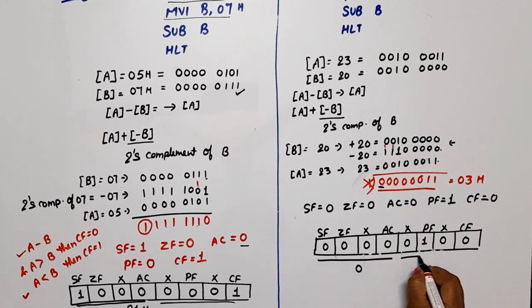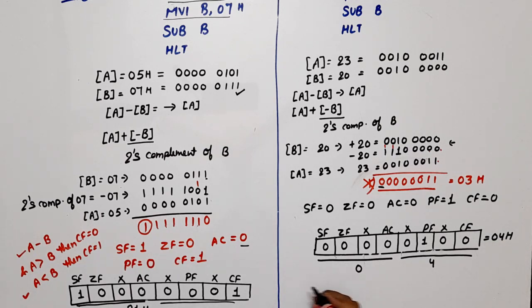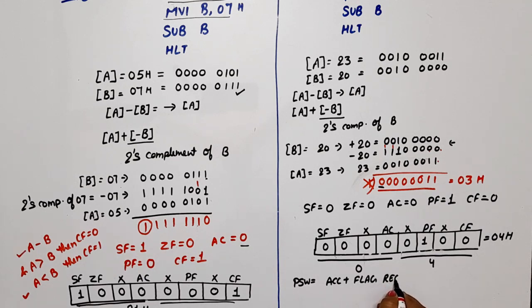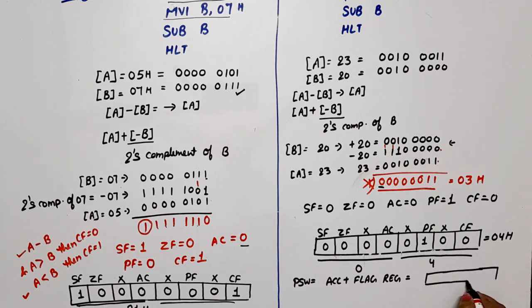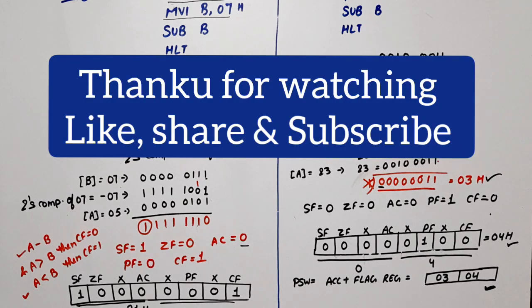The content of the flag register: SF=0, ZF=0, don't care=0, AC=0, don't care=0, PF=1, don't care=0, CF=0. In hex: 0000 = 0 and 0100 = 4, so the flag register value is 04H. One more thing — the PSW (program status word) is basically the accumulator plus the flag register. So the PSW value is 23H (accumulator content) followed by 04H (flag register), giving PSW = 2304H.